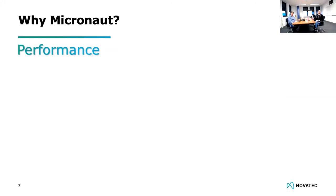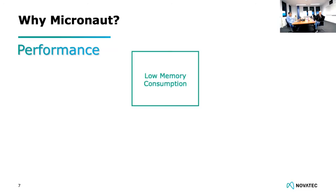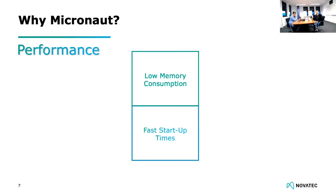Why did we choose Micronaut in the first place? There is one big factor that mattered a lot to us: performance. When it comes to performance, there are two major points — the first is low memory consumption, and the other is fast startup time. Low memory consumption is important because we are running in a containerized environment. You are already paying for a cluster with a certain memory capacity. If you use less memory than other services, you can deploy more services on the same cluster without buying a new one or extending it — which saves a lot of money in the end.